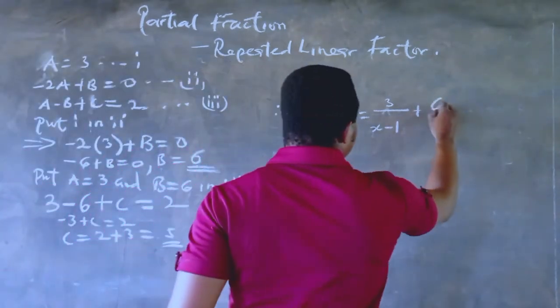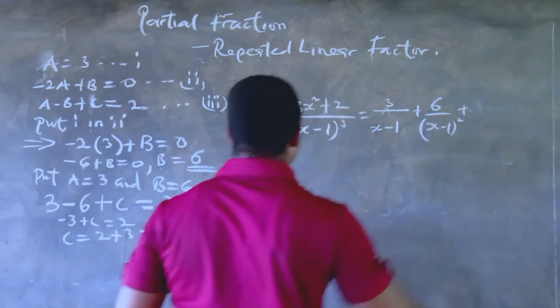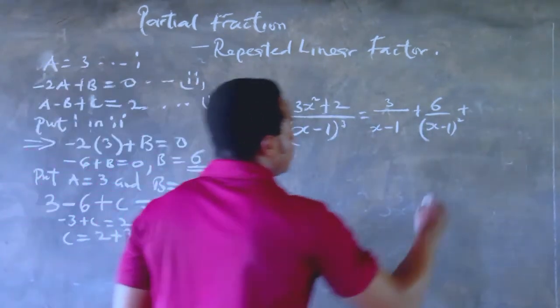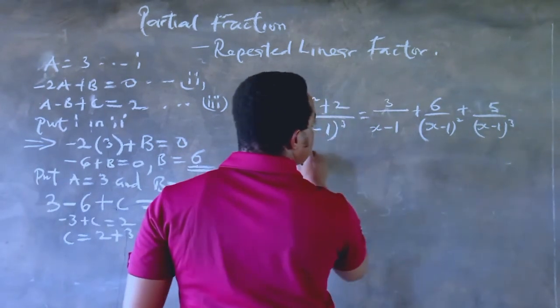So let us simply go on and put the value back in the original space where we introduced the constants. So we have 3 all over (x minus 1) plus 6 all over (x minus 1) squared and plus 5 all over (x minus 1) raised to power 3, and there you have it.